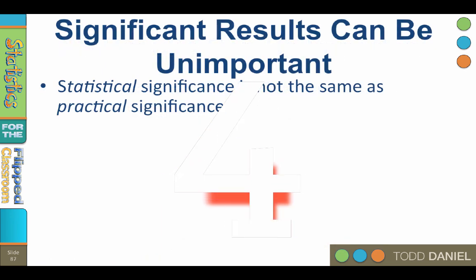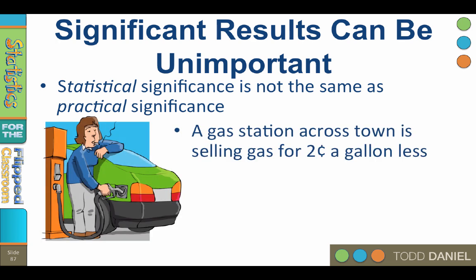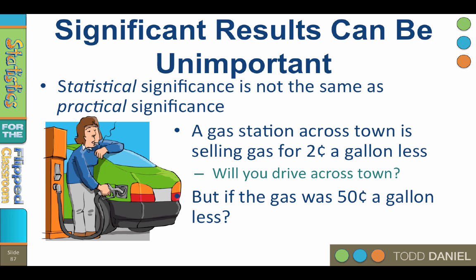Statistically significant results can be unimportant. Statistical significance is not the same as practical significance. Significance does not tell you whether a difference was large or small, important or meaningful. A difference can be statistically significant and yet practically trivial. So a gas station across town is selling gas for two cents a gallon less. That is a real difference. It is not due to chance. But is it enough to get you to drive all the way across town to fill up? Of course not. But if the gas was 50 cents per gallon less, that might get you motivated. Both of the differences are real, but only one is big enough to matter in the real world.